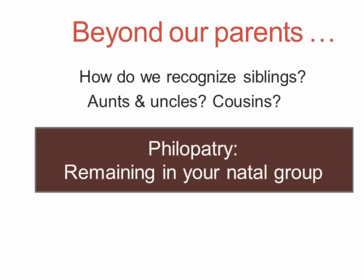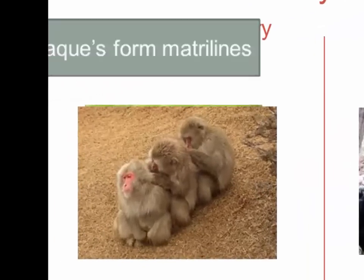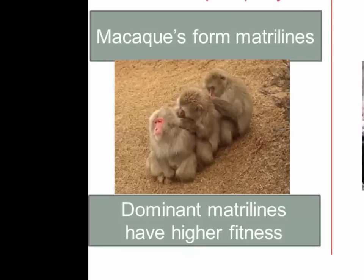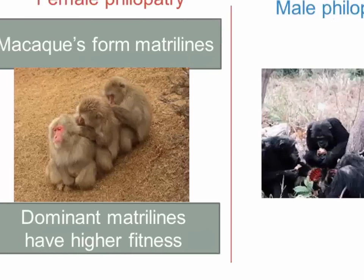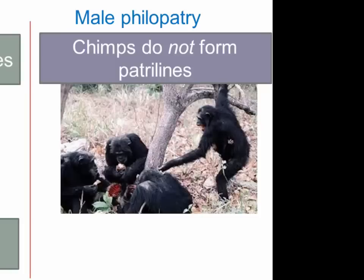Part of that is addressed by the concept of philopatry. The philopatric sex is simply the sex that remains in the natal group. Generally, one sex disperses and the other stays, which helps spread genes around and prevent excessive inbreeding. Looking across primates, female philopatry is found in some Old World monkeys — macaques form matrilines, and the dominant matrilines have the higher reproductive fitness. The best way to get ahead as a macaque is to belong to the most powerful group of females; then you eat first and your offspring have a better chance of surviving.